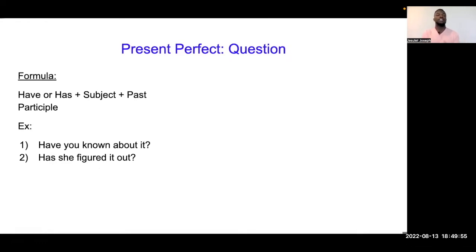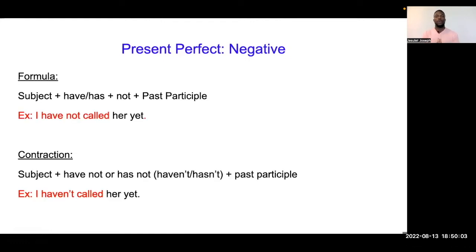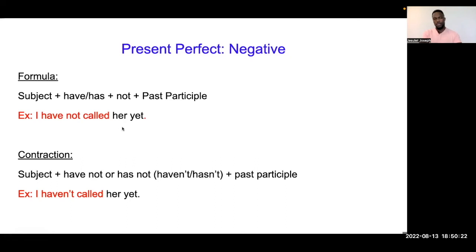Present perfect negative — formule negatif avek tan pou zon pa fe. Formule lan se: the subject plus have or has plus not plus the past participle. Par exemple: 'I have not called you yet.' I is the subject, have not called you yet. So: subject plus have/has plus not plus the past participle of the verb.